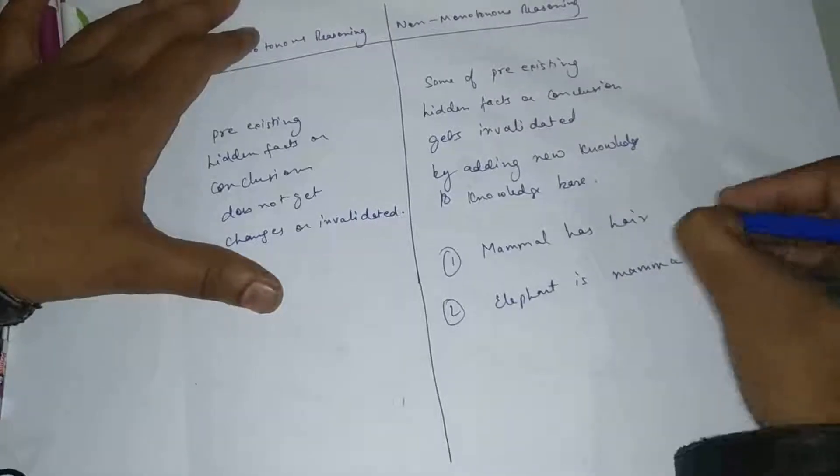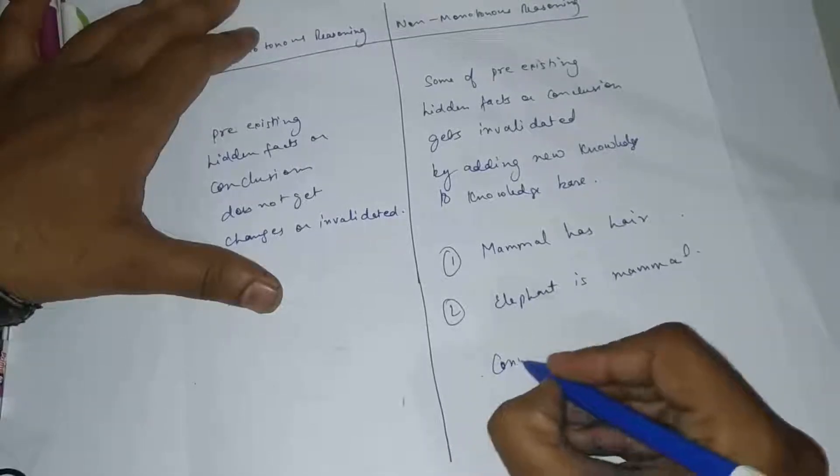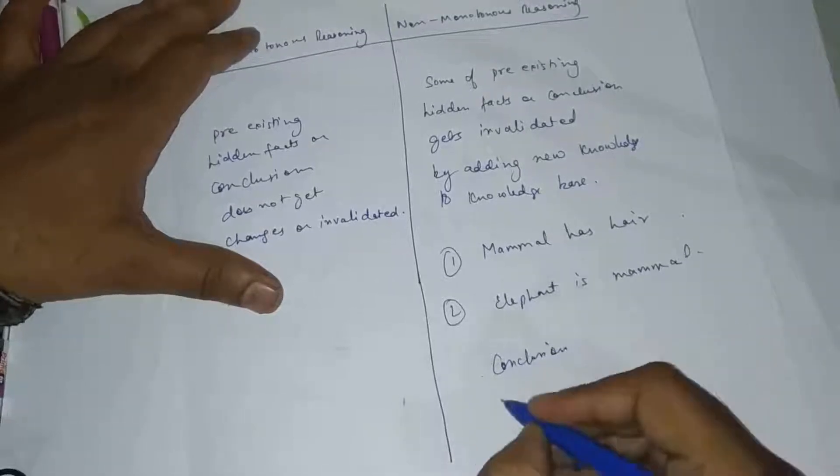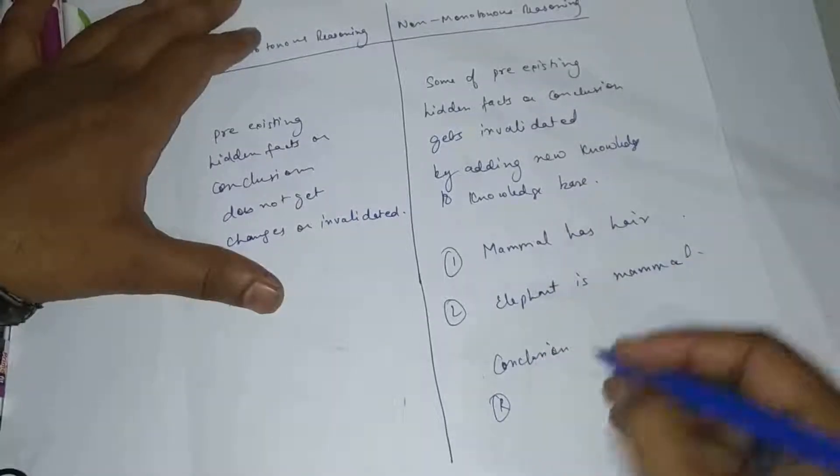I can derive a conclusion from these facts. I can make a new fact: that the elephant has hair.